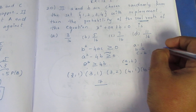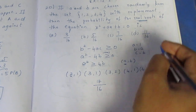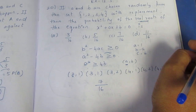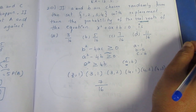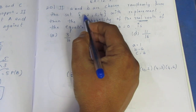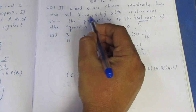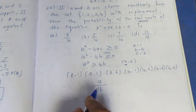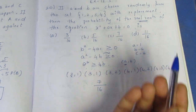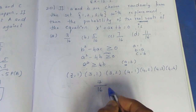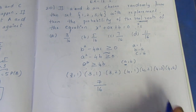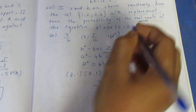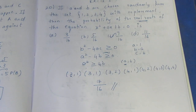The favorable outcomes include pairs such as (1,1), (1,2), (1,3) and others, giving us 7 favorable cases. The total sample space is 4 squared equals 16. So the probability is 7 by 16, and option C is the correct answer. Thank you.